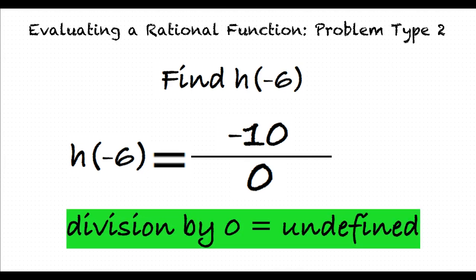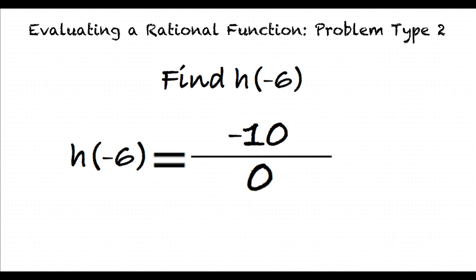Since our final answer cannot be h of negative 6 equals negative 10 over 0, our final answer must be that h of negative 6 is undefined. That's right. Hypothetically, if we graphed this function, our result means that there would be a horizontal asymptote at negative 6. So that is why we can say that h of negative 6 is undefined.